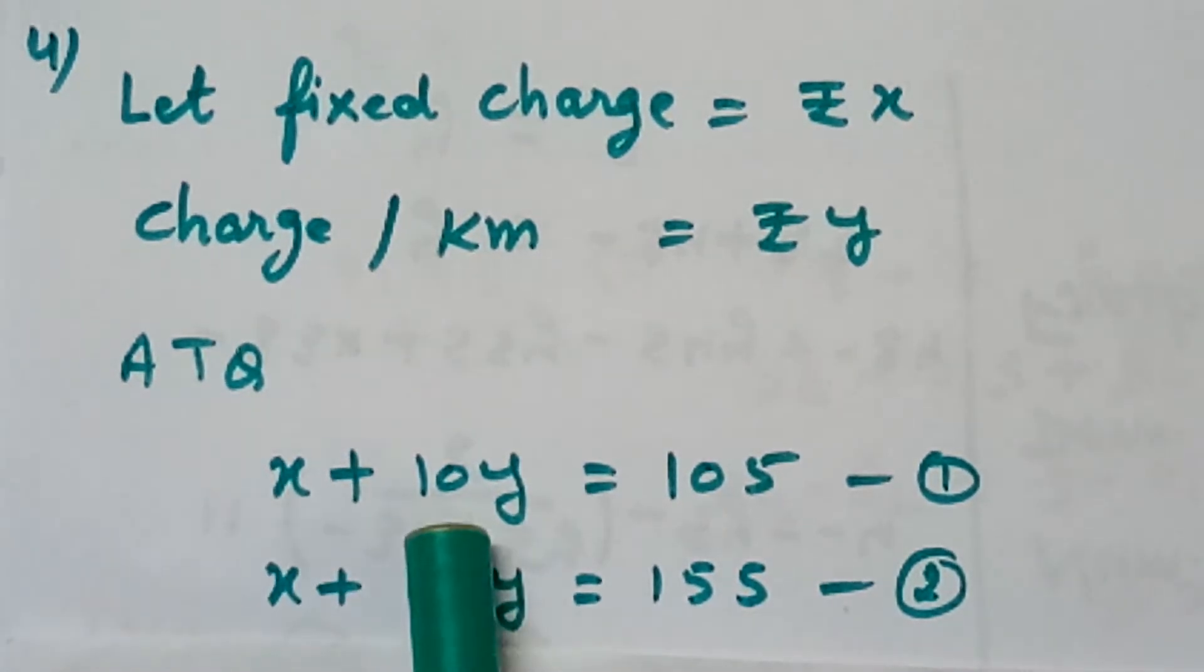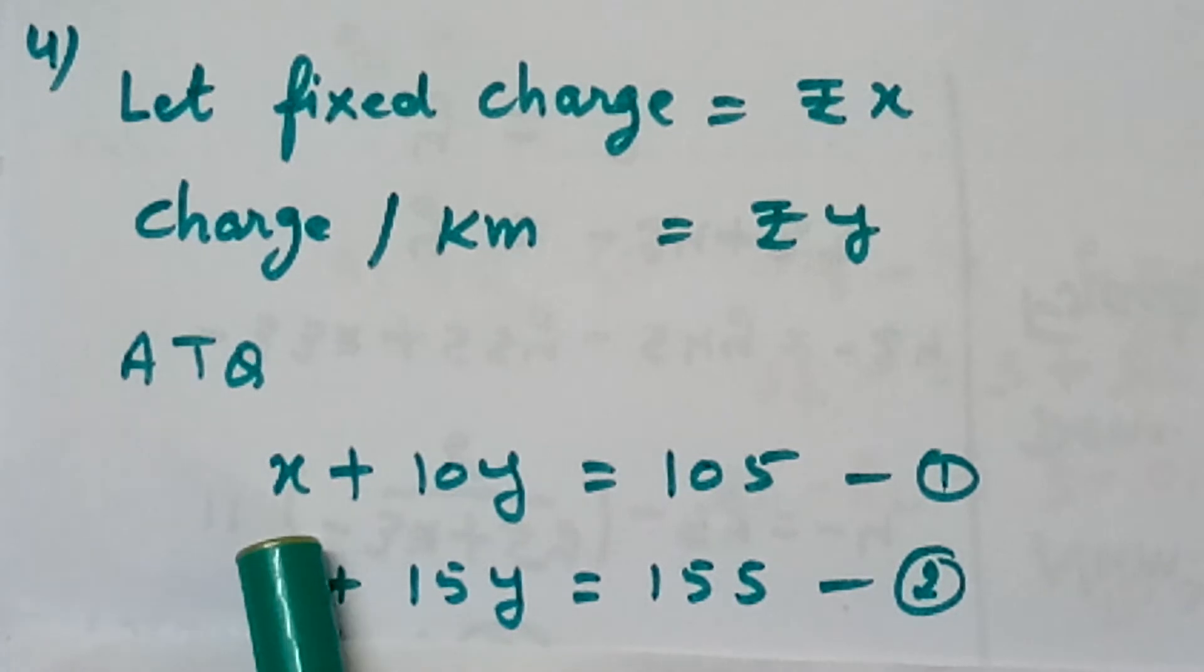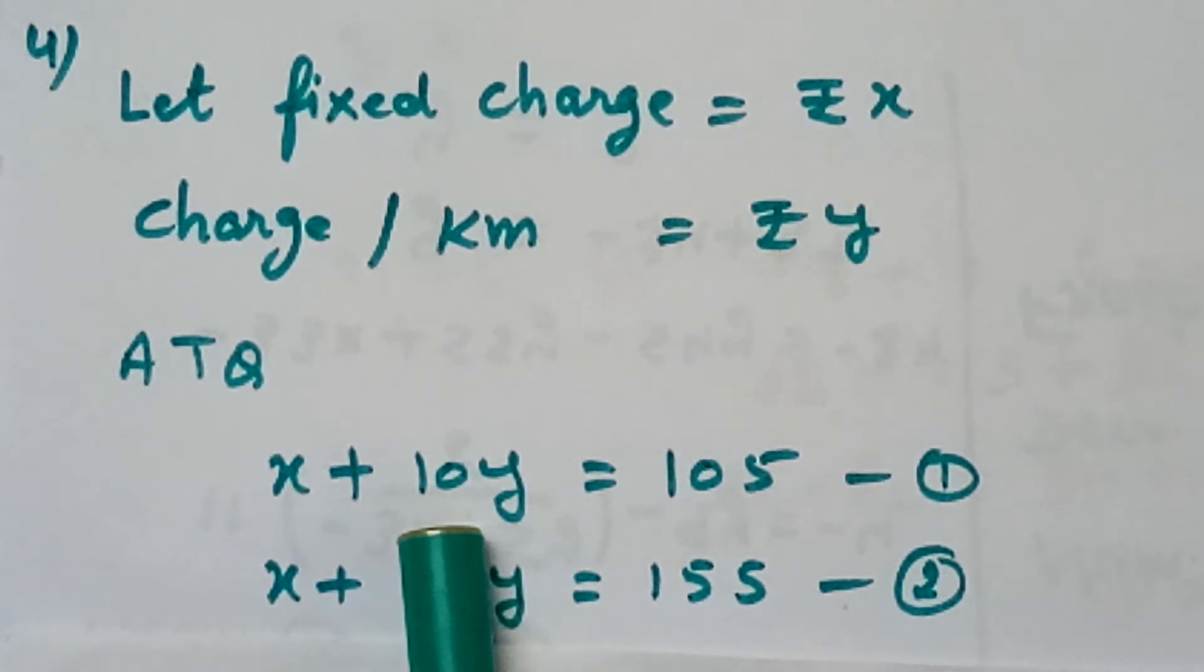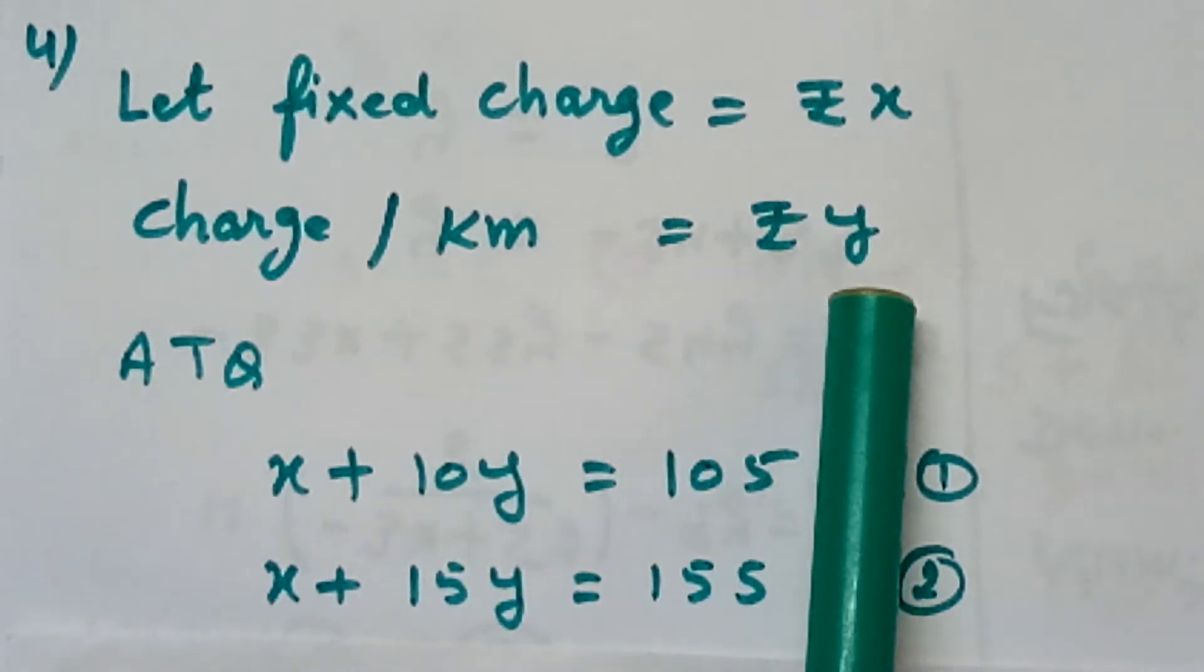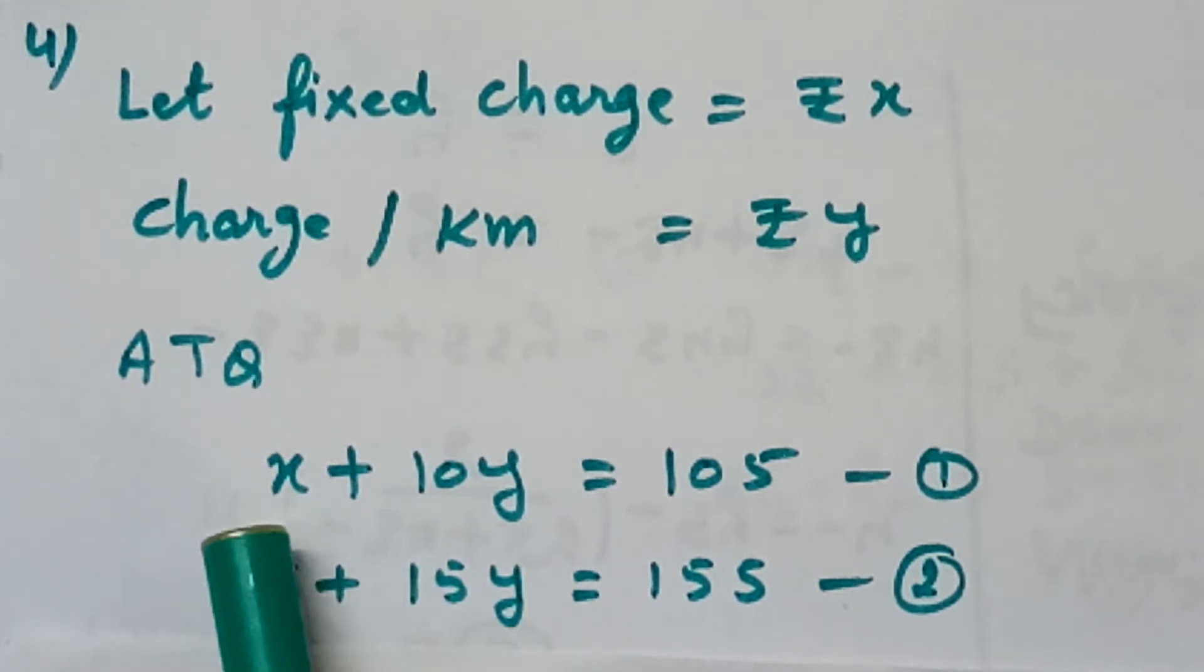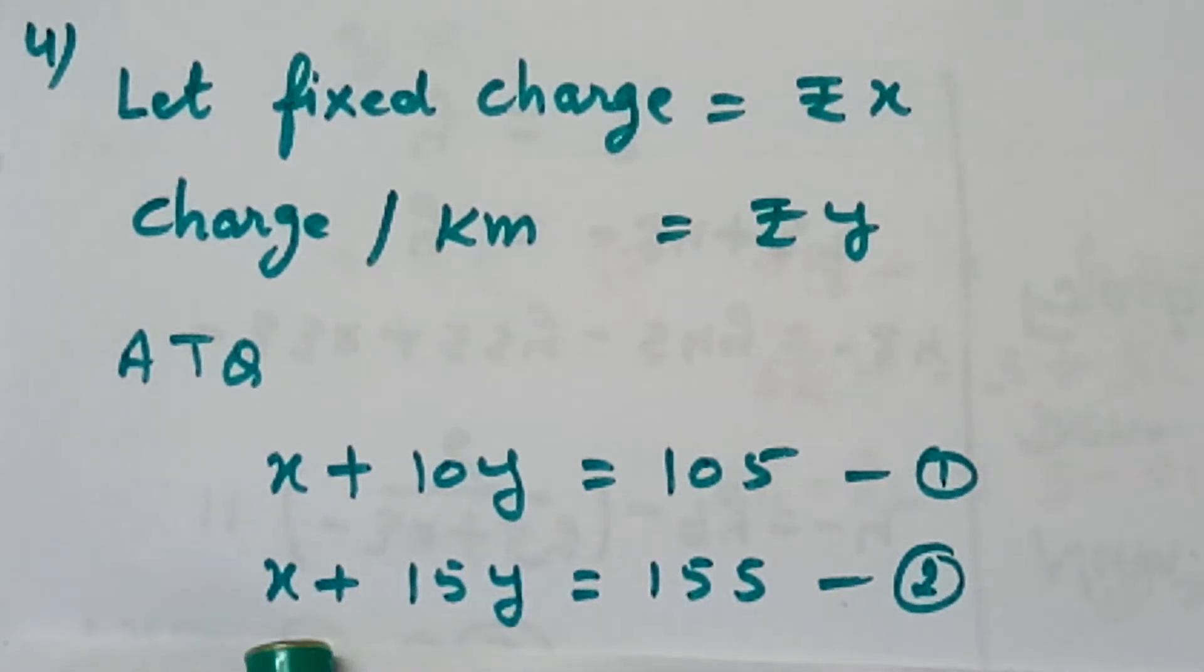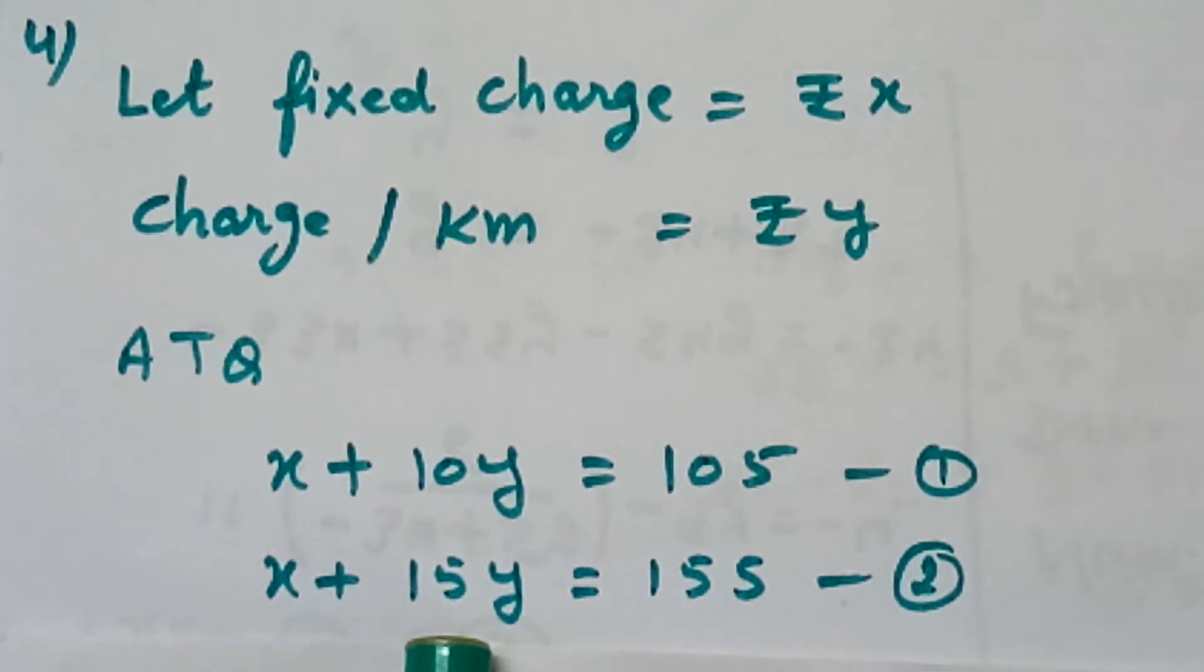First condition is that for 10 km, he has paid Rs. 105. If you see the condition, x is the fixed charge and distance covered is 10 km and charge is Rs. y. Total fare is 10y. 10 is the distance covered and y is the charge per km. It becomes x plus 10y equals to 105.